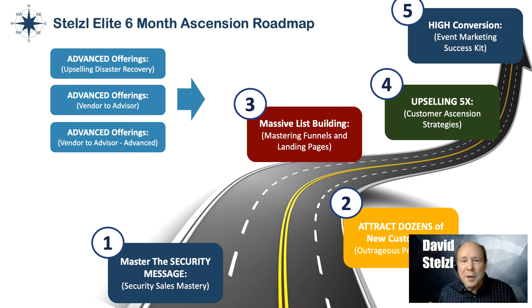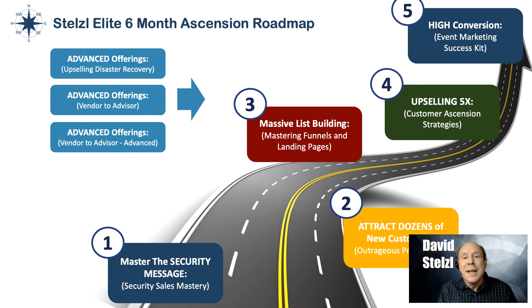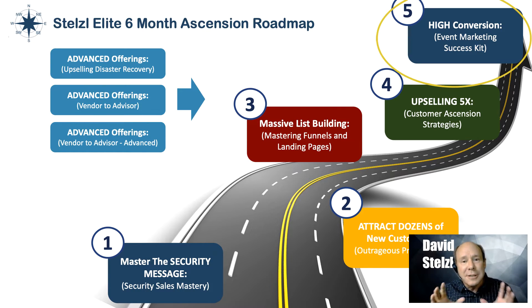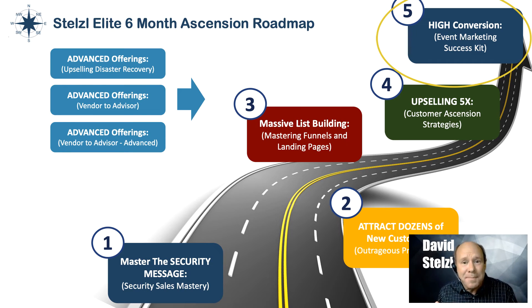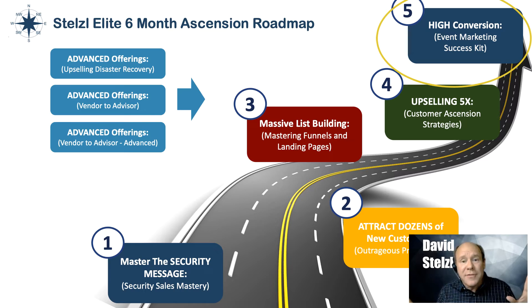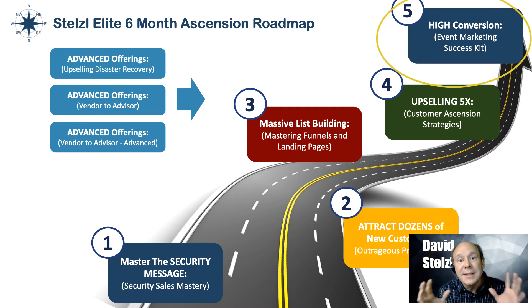Once all that's happening, you're probably already doing things like live events or lunch and learns. Everybody does them, but most people have zero conversion. I want to show you how to get your manufacturer and vendor partners to help you sponsor live events to convert large groups of people all at one time. I'll show you examples where myself and some of my clients have gone into meetings with 20, 30, or 40 people and converted all of them to a risk assessment, and then how to convert that risk assessment into business through our Marketing Event Success Kit.